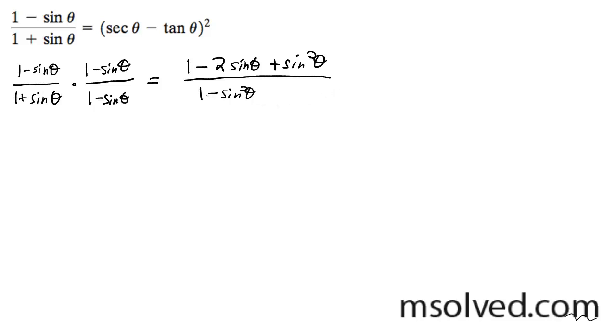Now you can rewrite the denominator as cosine squared theta as a trig property. So you bring this over here,